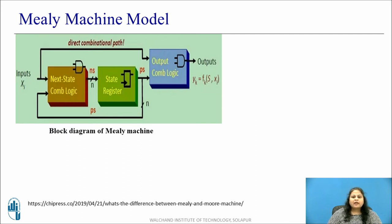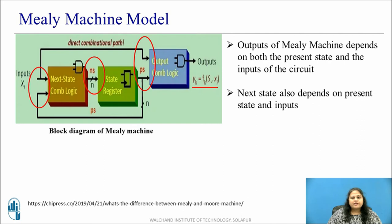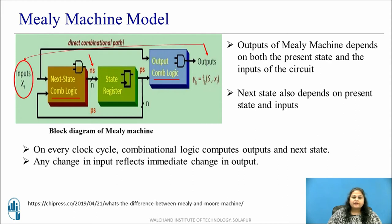The block diagram of the Mealy machine model shows that the outputs of the Mealy machine depend on both the present state and inputs of the circuit — that is, output is a function of inputs and present state. The next state also depends on present state and inputs. On every clock cycle, combinational logic computes the output and next state. Any changes in the input are reflected immediately in a change in the output. Thus, we can say that the Mealy machine has asynchronous output.